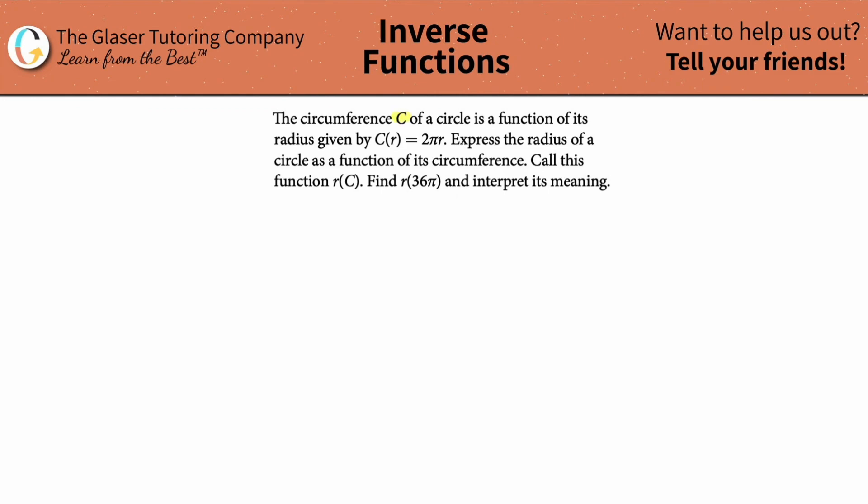The circumference C of a circle is a function of its radius given by C(r) equals 2πr.